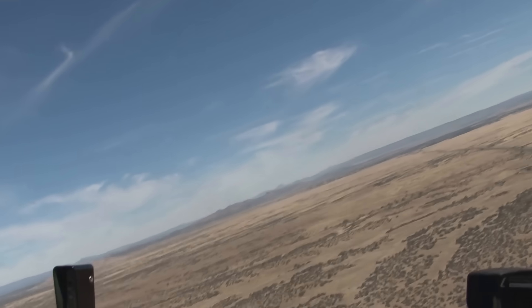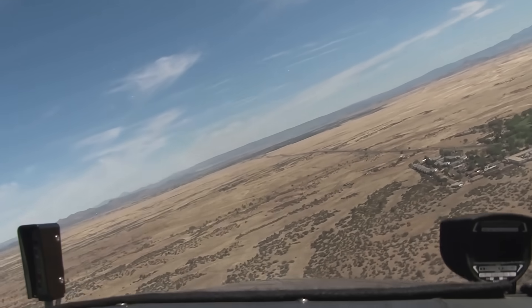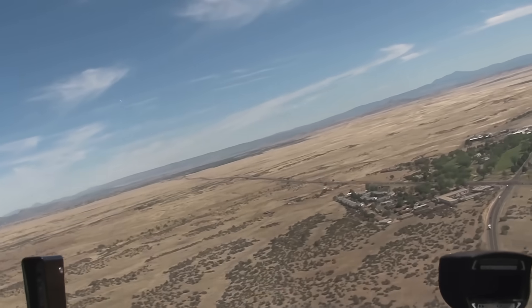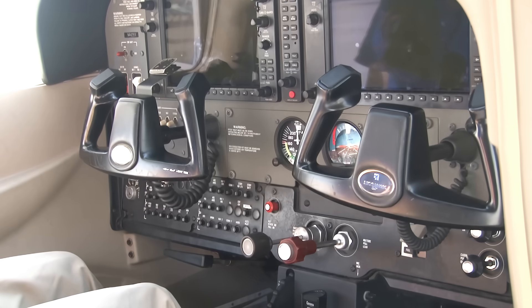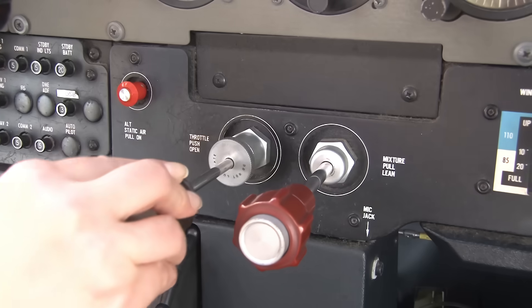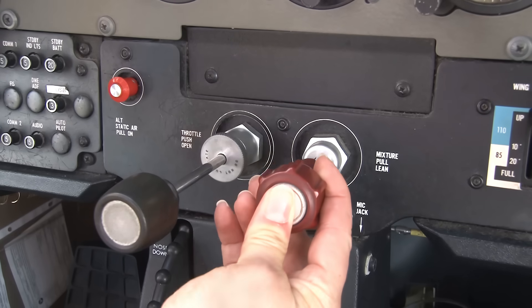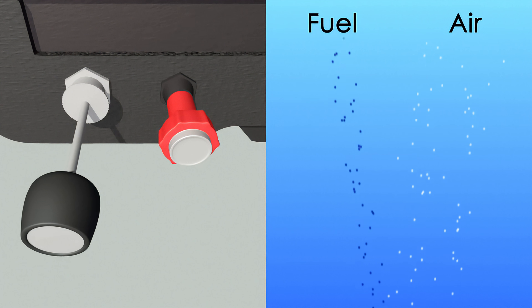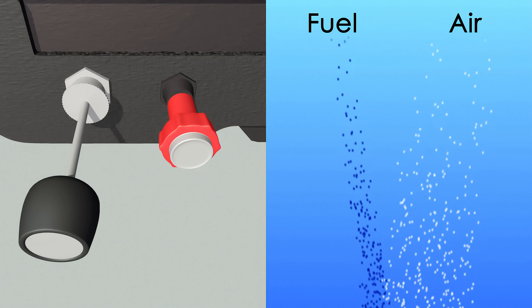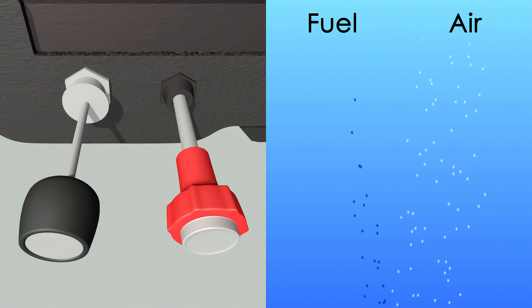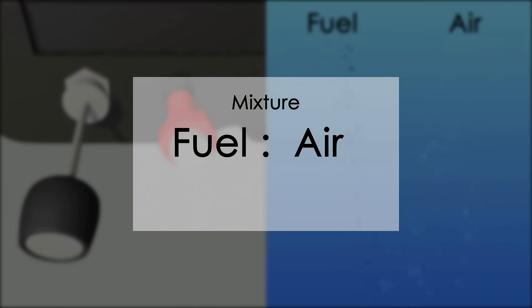Now, how do we get the fuel and air into the cylinders? It's simple. The induction system. Inside of the cockpit of most general aviation aircraft, there are the throttle and mixture controls. The throttle controls the amount of fuel and air that go into the cylinders, while the mixture controls how much fuel is mixed with the air. In simple terms, the mixture controls the ratio between fuel and air.